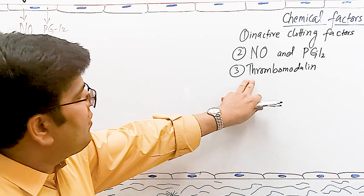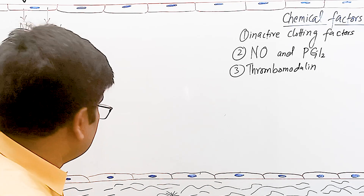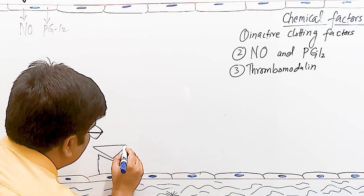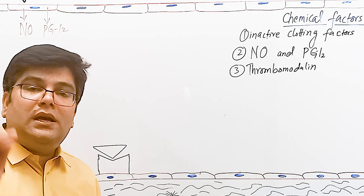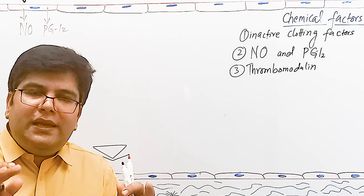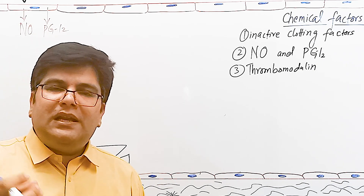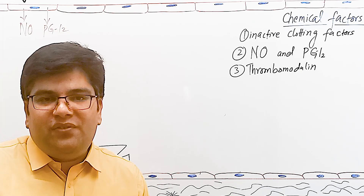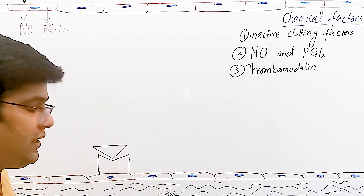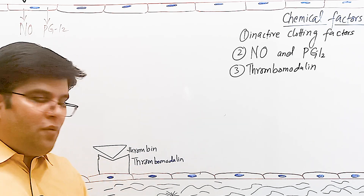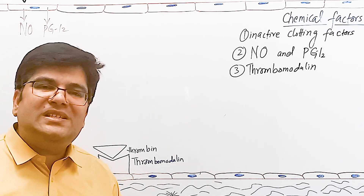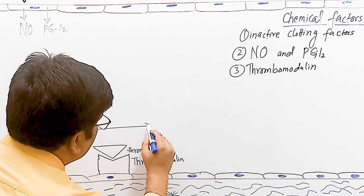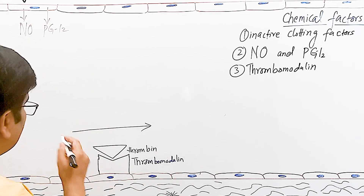Another important chemical for normal anticoagulation is thrombomodulin. Thrombomodulin is a protein attached to the normal endothelium of blood vessels. It removes thrombin from the blood — thrombin, the activated form of prothrombin, is clotting factor number 2. Because thrombin plays a multitasking role in multiple steps of the extrinsic, intrinsic, and common pathways — stimulating the cascade in a positive feedback fashion — this thrombin must be removed by thrombomodulin, decreasing blood clotting tendency.